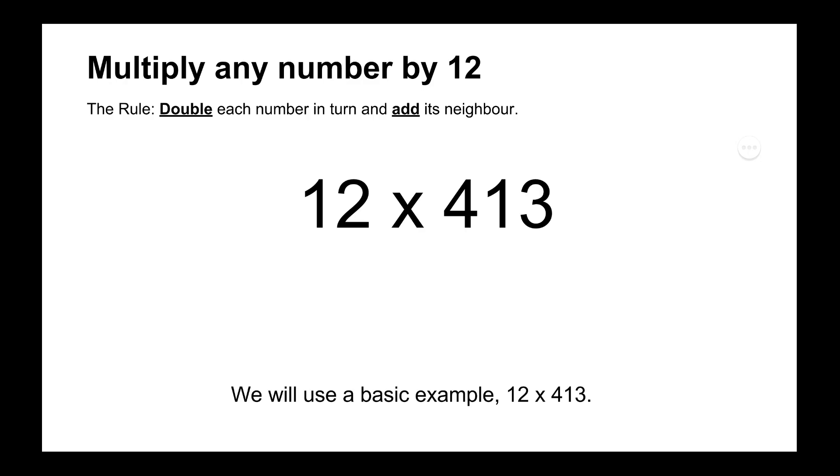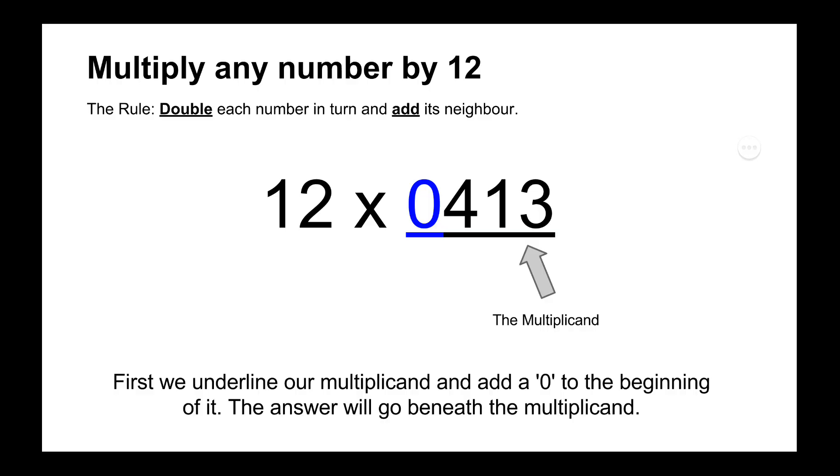So we'll start off with a relatively easy calculation here: 12 times 413. And just like we did with rule number 11, we'll add a zero to the beginning of the multiplicand which is the number on the right, and we'll underline it because the answers for each number that we deal with are going to be going below the multiplicand.